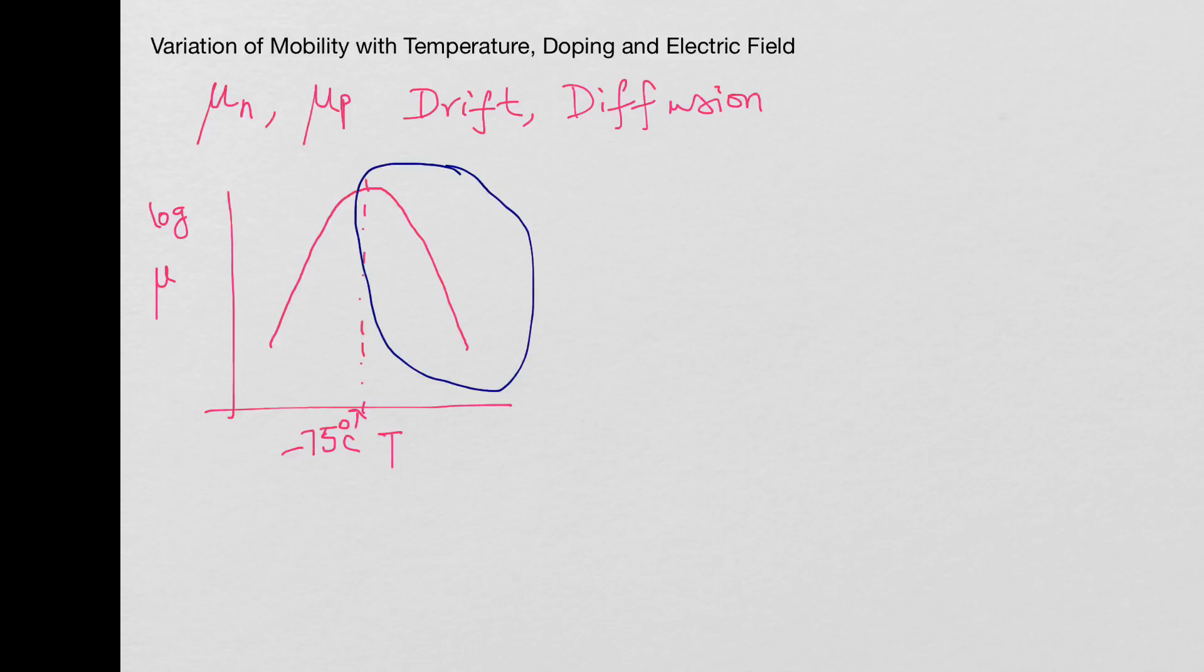In this case the mobility falls with respect to temperature T power minus 3 by 2. The peak occurs here. In our area of interest we can say that mobility decreases, mu is inversely proportional to temperature.